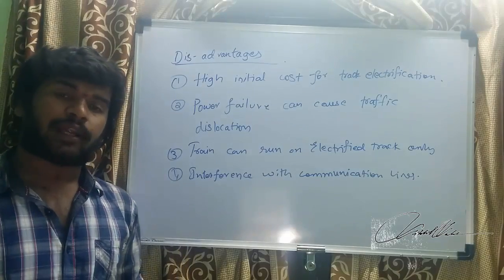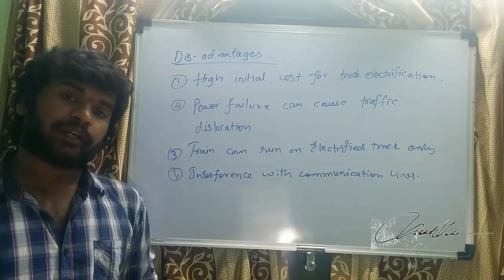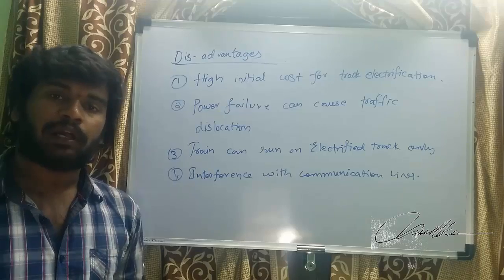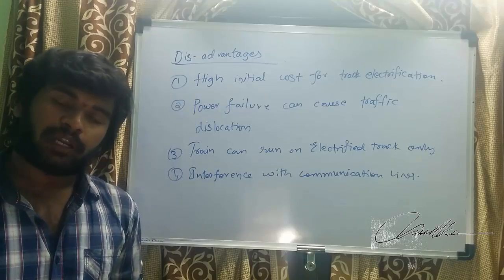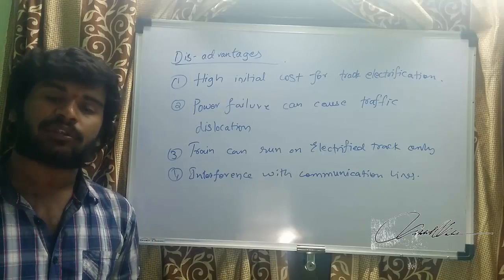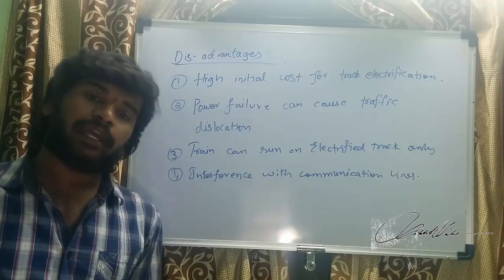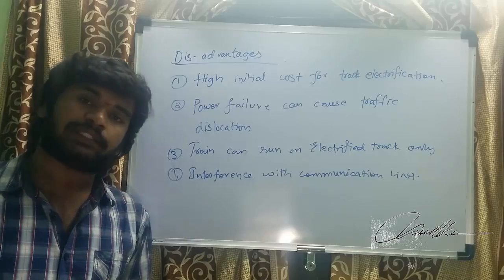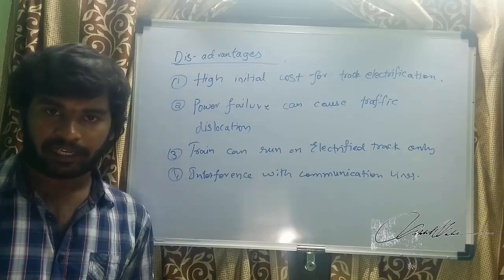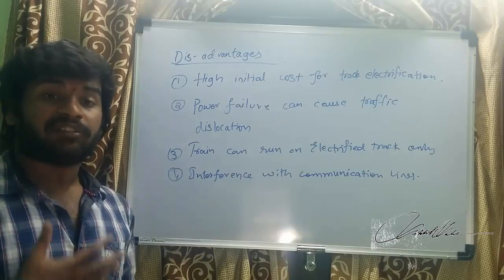Disadvantages of electric traction: high initial cost of track electrification. Running trains on batteries is not feasible for heavy loads — large numbers of batteries would be too costly. The practical approach is getting energy from an external distribution network by laying lines along the track, called track electrification. This involves substantial labor and capital cost, making initial costs very high.